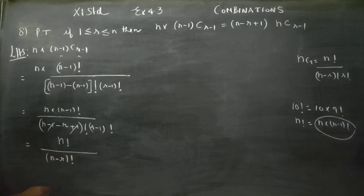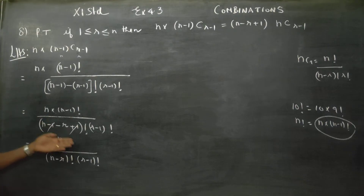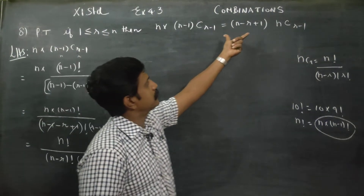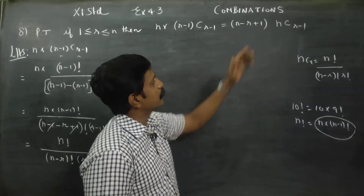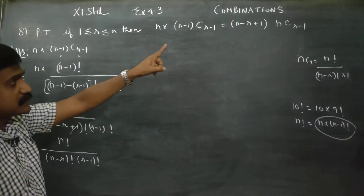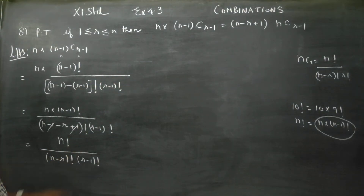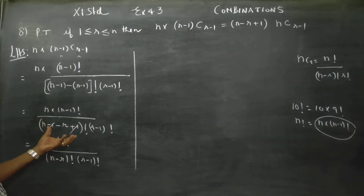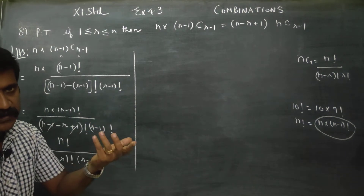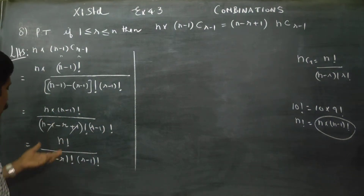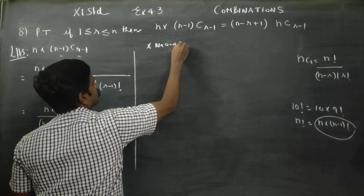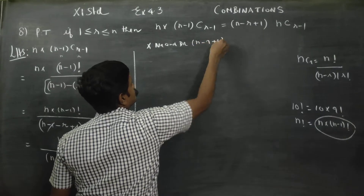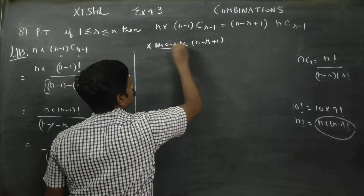After simplification, we have n factorial by n minus r factorial into r minus 1 factorial. Now I am going to multiply numerator and denominator by n minus r plus 1.